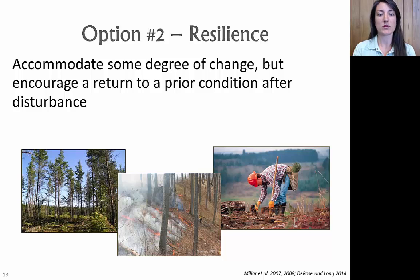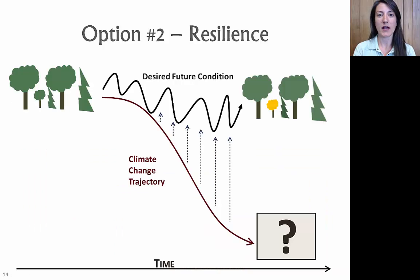The second option is resilience — trying to accommodate some degree of change but encouraging a return to a prior condition after a disturbance. We might call this the 'health care option': minimizing stress, promoting health in the stand or ecosystem, promoting alternatives, backup plans, and redundancies. We already do this with activities like thinning, prescribed burns, or planting to increase rare species. This option allows disturbances to occur and impact the stand, but we want the system to eventually return to its original condition. It still incurs more risk through time, particularly if climate change trends are heading in a different direction.